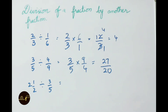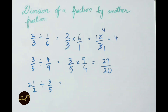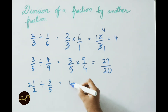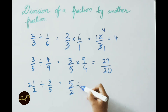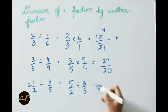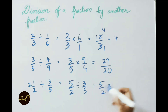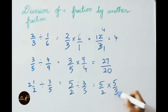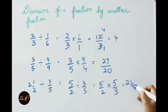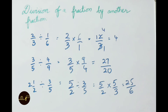See the next example: 2 and 1/2 divided by 3/5. Convert mixed fraction to improper fraction. 2 × 2 = 4, 4 + 1 = 5. Write down 5/2 divided by 3/5. That equals to 5/2 × reciprocal of 3/5, which is 5/3. Multiply the numerators: 5 × 5 = 25, denominators: 2 × 3 = 6. So the answer is 25/6.